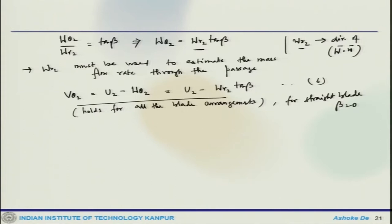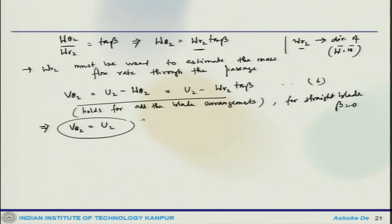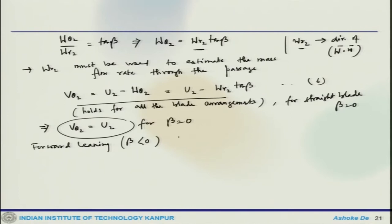For beta equals 0 (straight blade), we obtain v_theta2 equals u2. For forward leaning, where beta is negative (less than 0), you get v_theta2 equals u2 plus w_r2 * tan(beta).